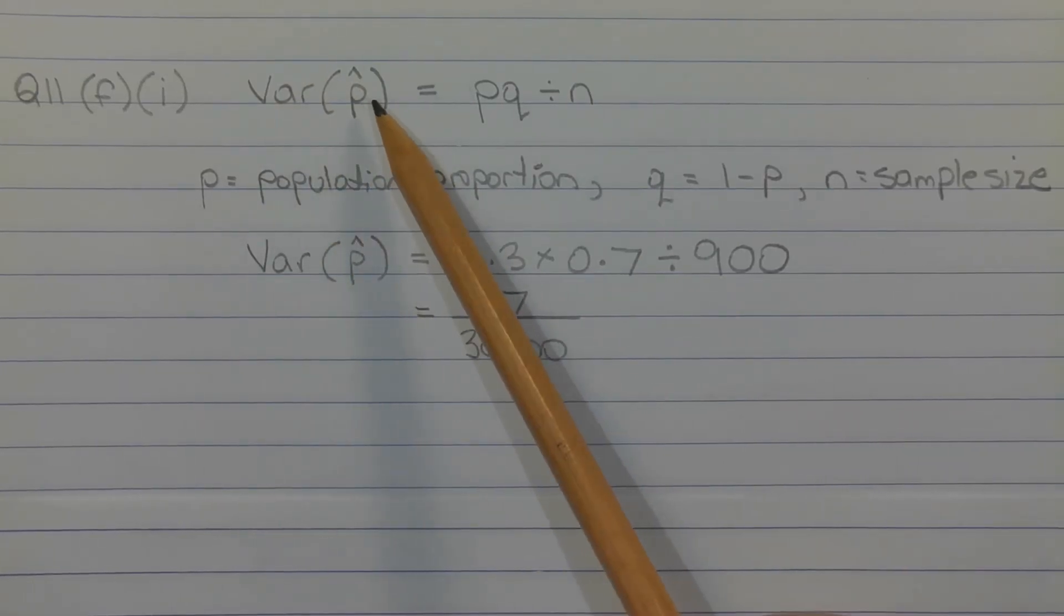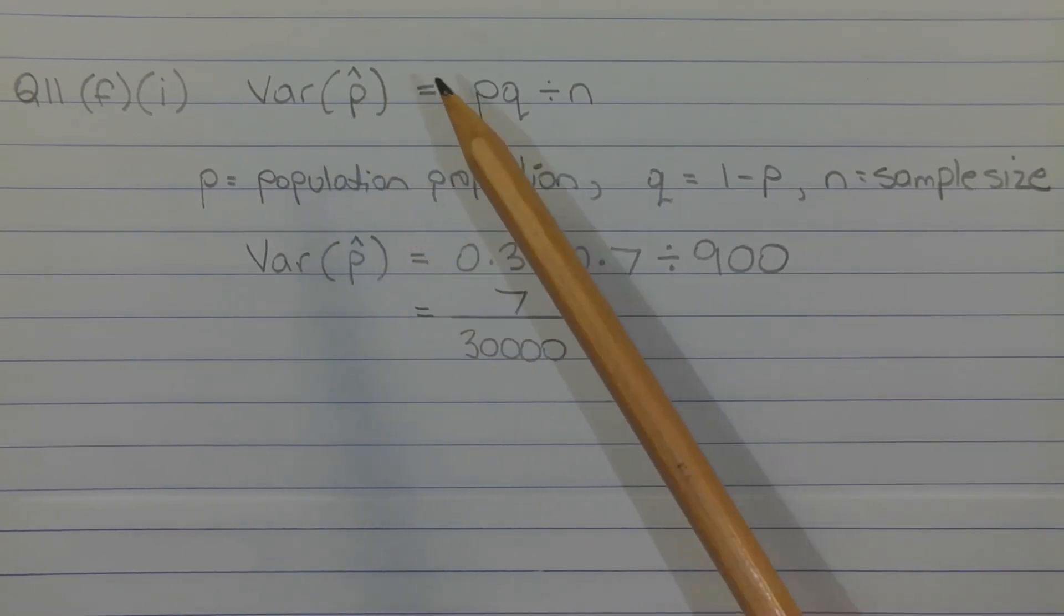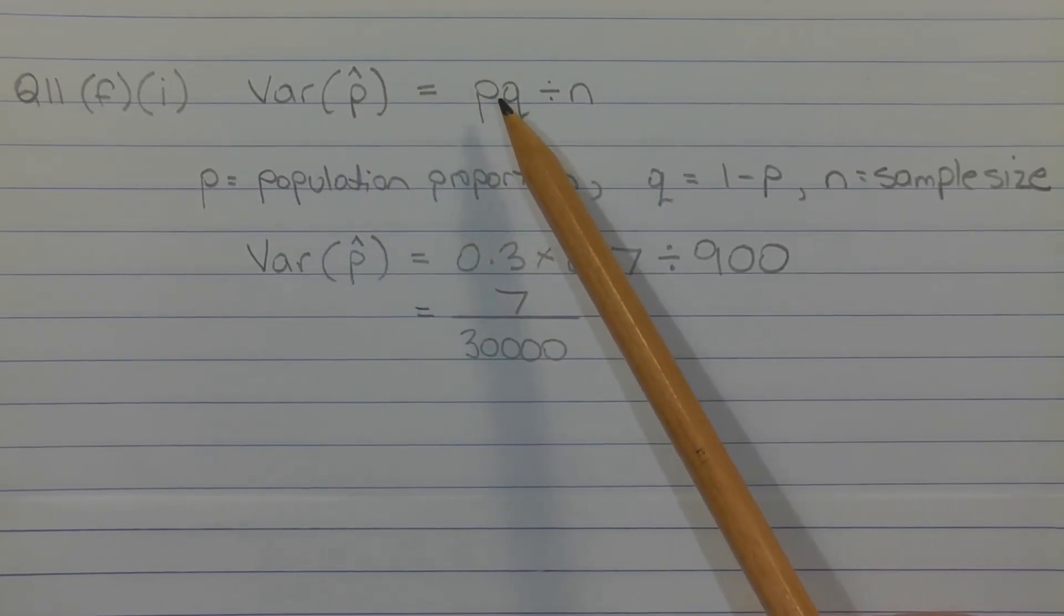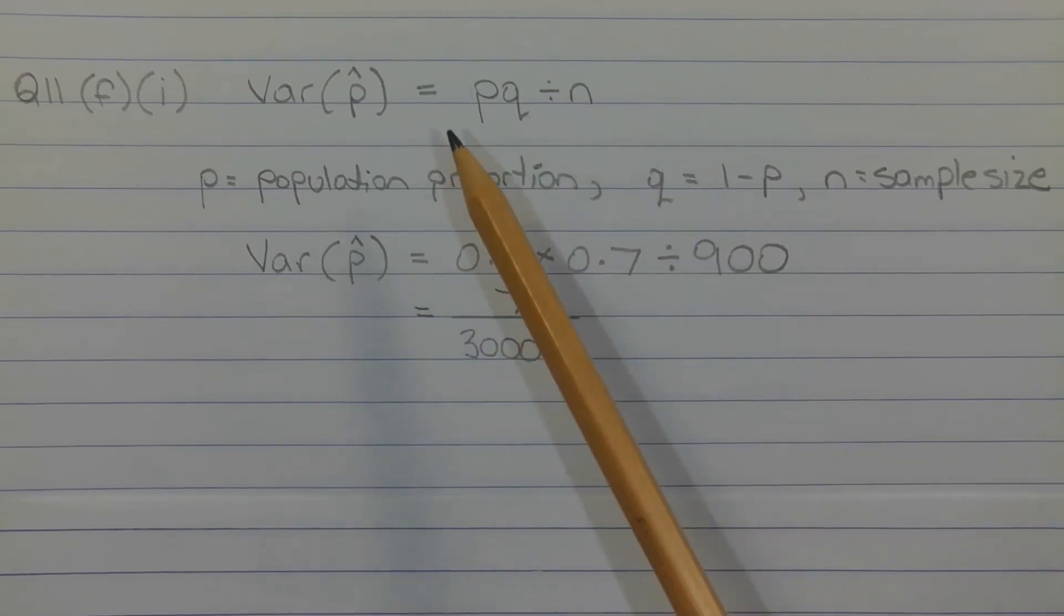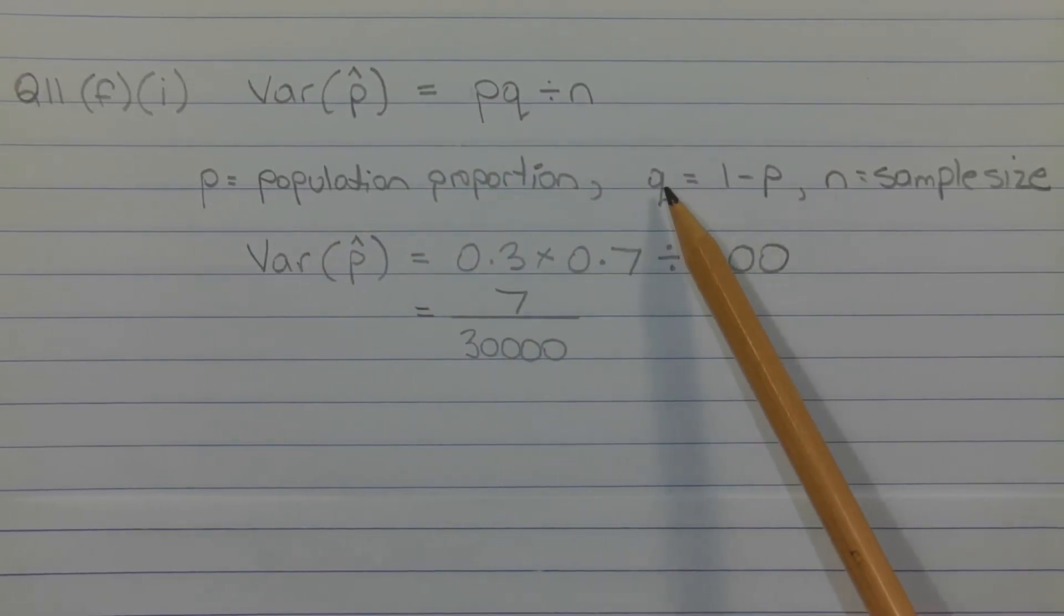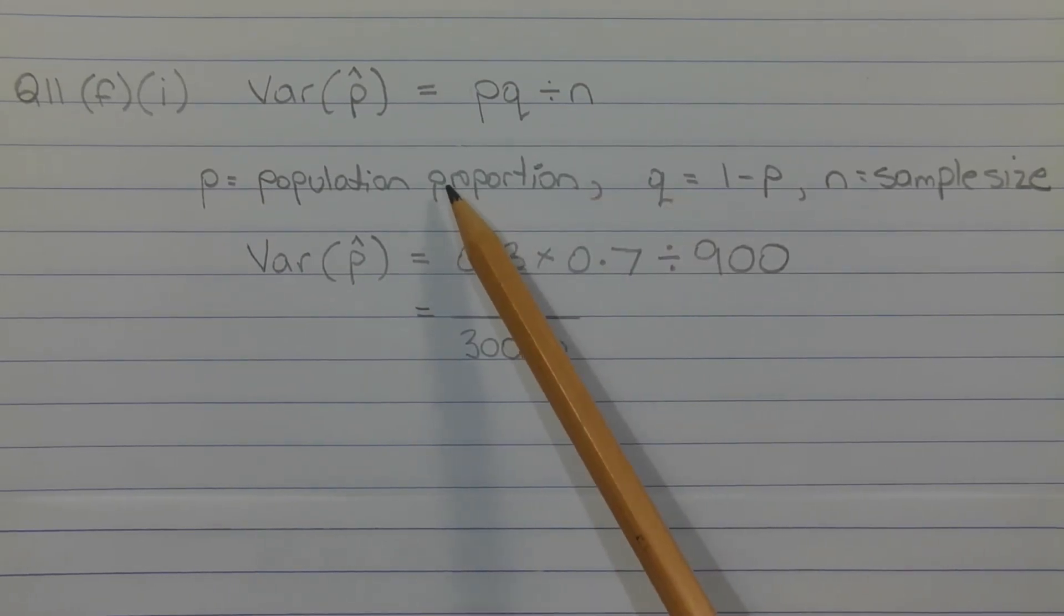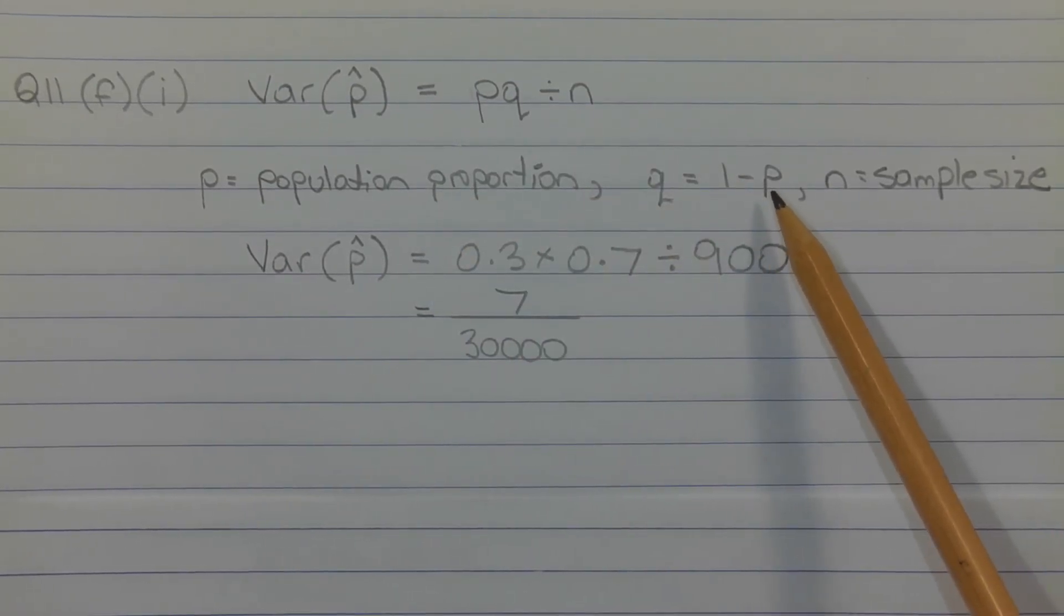The variance of the sample proportion P-hat is given by the formula P times Q divided by N, where P is the population proportion, Q is the complement of the population proportion given by 1 minus P, and N is the sample size.